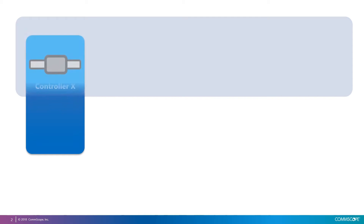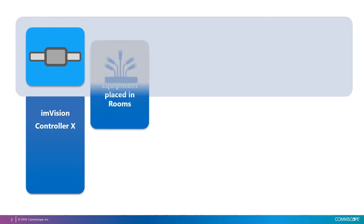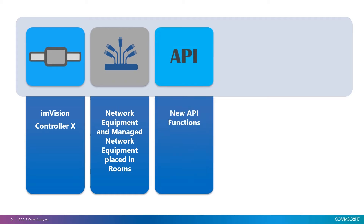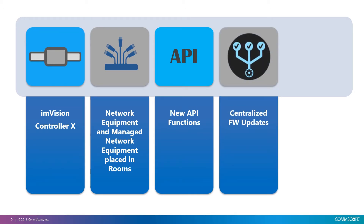One of the main elements in this release is the ability to support the new InVision Controller X device. Another important addition is that you can now add network equipment and managed network equipment in rooms. This allows System Manager to support new horizontal cabling topologies like some of the UCG proposed ones. We have also added new API functions that allow System Manager to share more information with external systems. The firmware update feature is now enhanced to support centralized distribution of InVision Controller and InVision Controller X firmware packages.